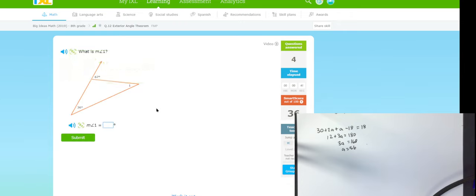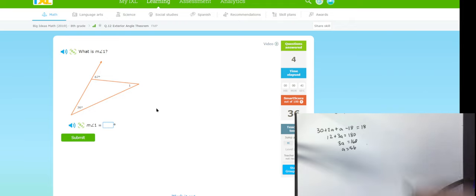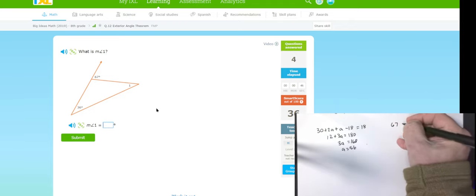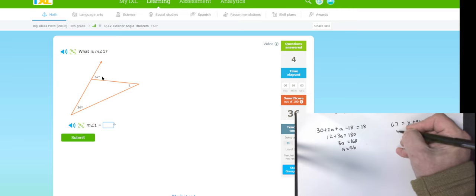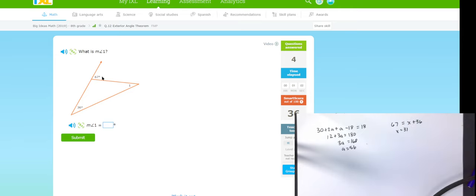Now, this one's a little bit different. Now, I know 67 is equal to x plus 36. What plus 36 equals 67 or take 67 minus the 36. And I get x is equal to 31. So they've made that one backwards on you.